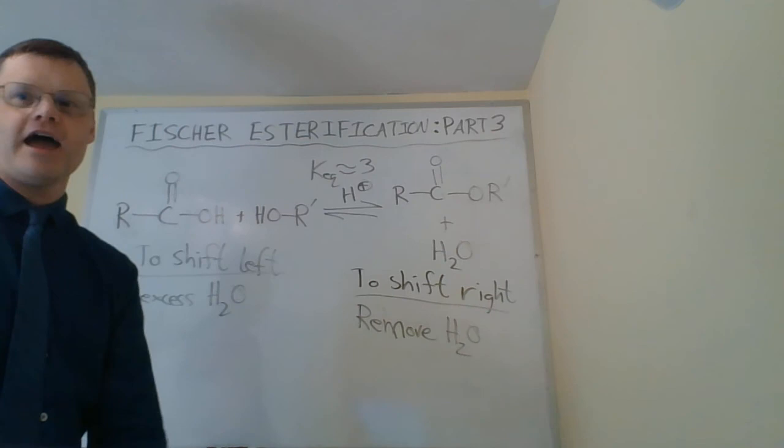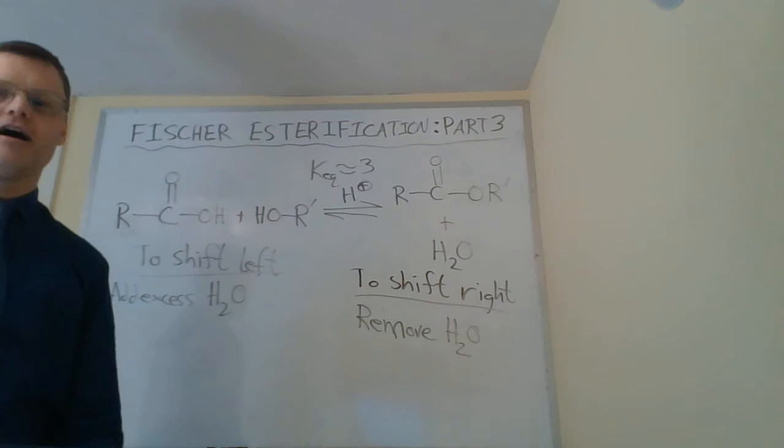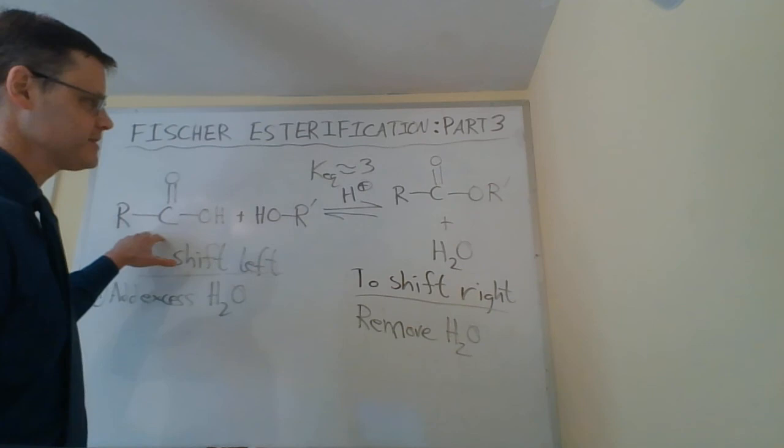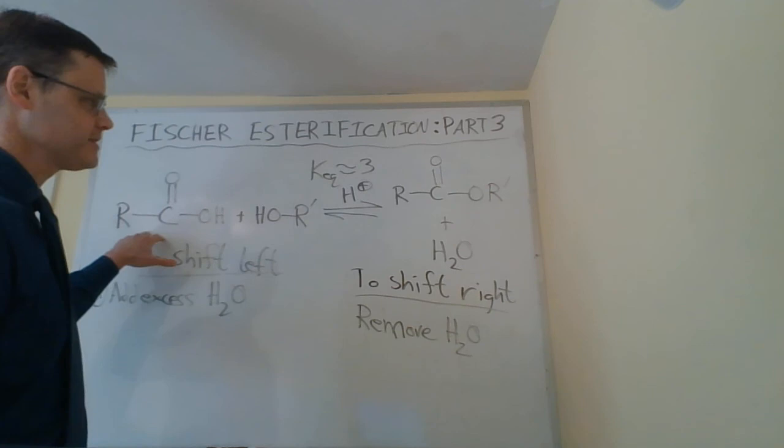That concludes our part three of the Fischer esterification. I hope you enjoyed watching this. Now, one other thing I want to say: Right and left refer to the context of what I've drawn here, where the carboxylic acid and alcohol are on the left, and the ester and water on the right. You could also switch these, have the water and ester on the right, and then you have to switch these. Anyways, thanks for watching.